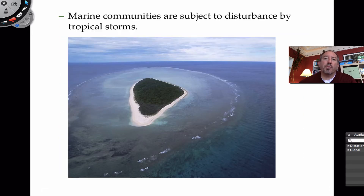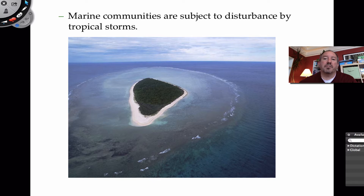The marine community — which we often forget since we're terrestrial — exists in the fact that 75% of the earth is water. Marine communities are subject to these disturbances as well. There are tropical storms that can come, and there are even major ones like a tsunami, which is an earthquake happening on the ocean floor that disrupts a massive amount of water and causes a tidal wave, which is rather a huge disturbance.